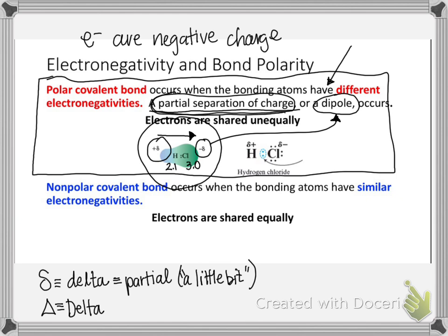The second illustration shows the same concept differently. It shows the shared pair rather than drawing the cloud. Again, chlorine has a value of 3.0 and hydrogen has 2.1, so the electrons are drawn toward chlorine. As a result, chlorine is partially negative and hydrogen — the atom with the lower electronegativity — is partially positive. When you have a partial negative and a partial positive separated like this, that is called a dipole.